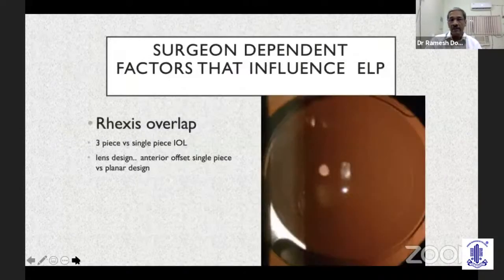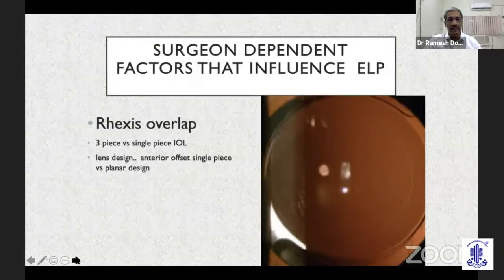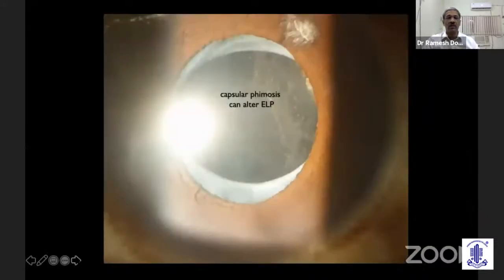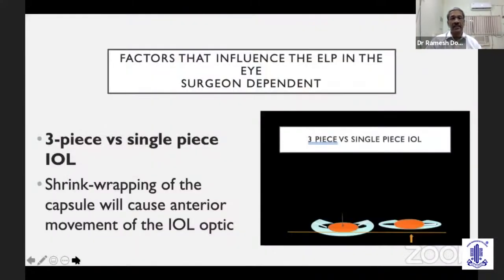All those factors are not dependent on us, but we have three major surgically induced factors that will affect ELP. The most important of these is the rhexis overlap — we should aim for a 0.5 to 0.7 mm, 360-degree overlap of our intraocular lenses. Severe capsule phimosis can alter ELP, as can a large rhexis, which can permit the intraocular optic of a three-piece lens to move forward and change the ELP.